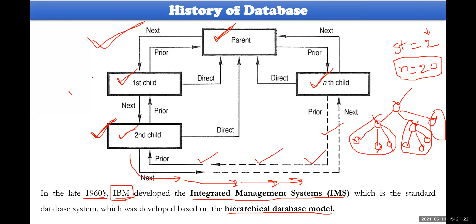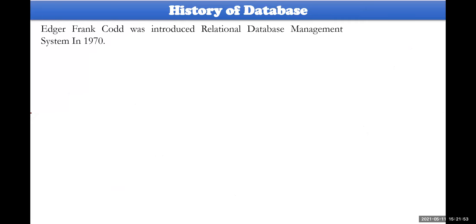With both Bachman's model (IDS) and IBM's model (IMS), storing a new record takes a huge amount of time, and searching for a particular record is also a very difficult process. To address these problems, Edgar Frank Codd (EF Codd) identified the issues pertaining to both IMS and IDS.